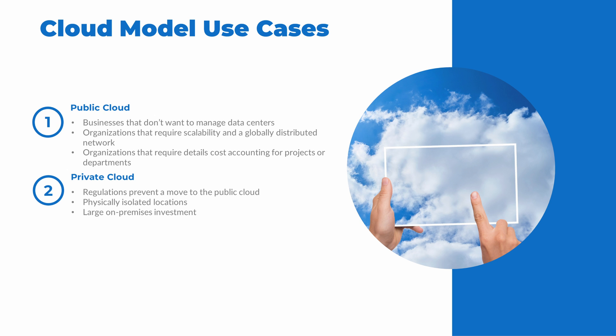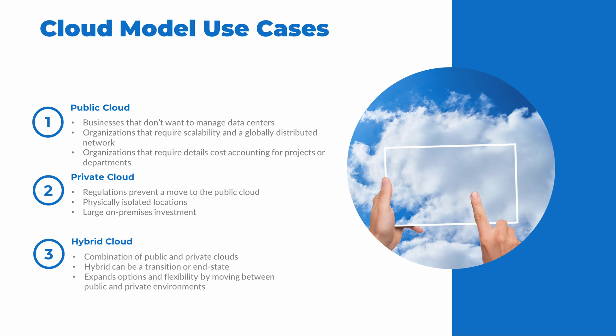A hybrid cloud configuration could be a transition from on-premises to the cloud, operating in both environments as services are moved. But it doesn't have to be a transition — hybrid cloud can be an end state or a long-term solution. Hybrid also works well for organizations that take a best-of-both-worlds approach, leveraging a mix of services to keep some on-premises and expanding to the cloud as needed.